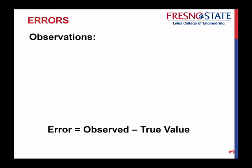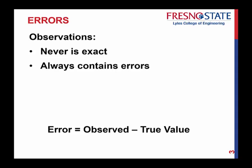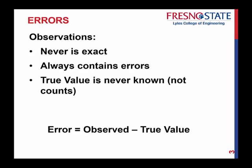As we talk about errors in our observations, there are several things we need to understand. One: observations are never exact. Two: they always contain errors — whether indirect or direct observations, whatever they may be, they always contain errors. Three: the true value is never known.